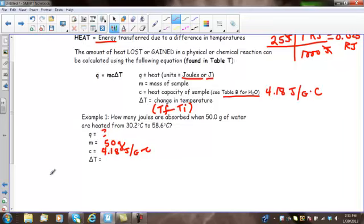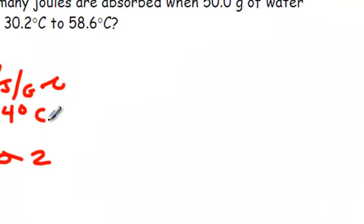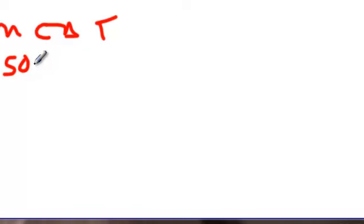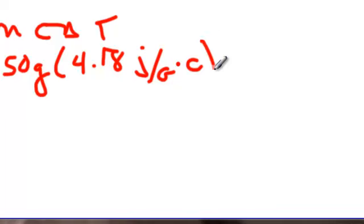And, delta T. So, we have delta T is equal to 58.6 minus 30.2. And, that's going to be equal to 28.4 degrees. So, we get our formula, Q equals MC delta T, and we substitute in.